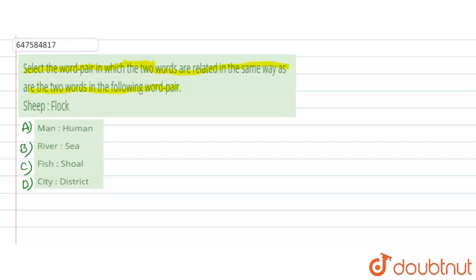We have given a word pair of sheep and flock. And we have to tell from the options that we have given, which word pair is the same and which one is different.